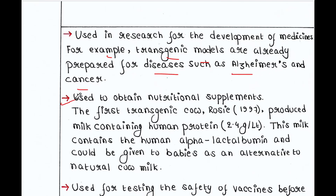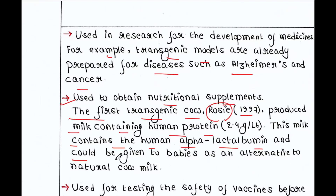Transgenic animals are used to obtain nutritional supplements. The first transgenic cow was Rosie, created in 1997. Rosie produced milk containing human protein at 2.4 grams per liter; this milk contains human alpha-lactalbumin and could be given to babies as an alternative to natural cow milk.